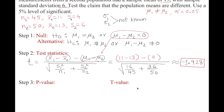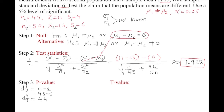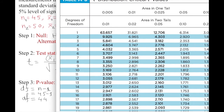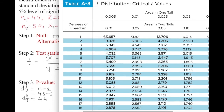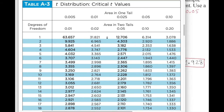I will show both the p-value approach and the critical value approach. For p-value, we need degree of freedom. For two independent samples in this approximate method, we use the smaller sample: df = 45 − 1 = 44. We go to the t-table with df = 44, locating the closest row which is 45.